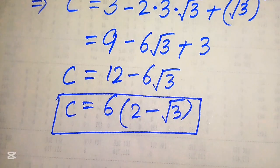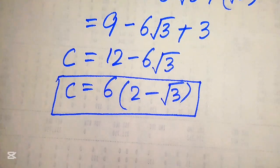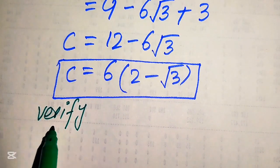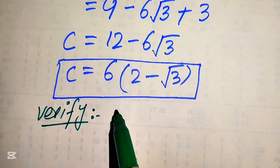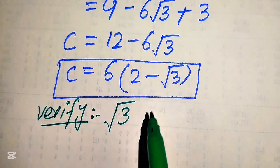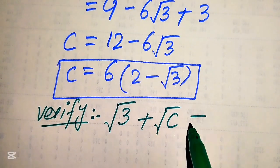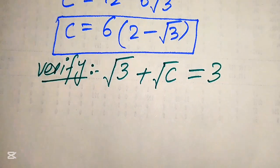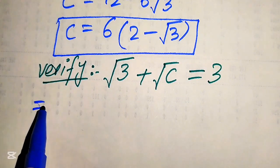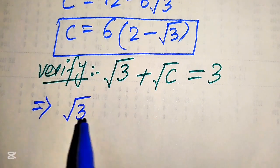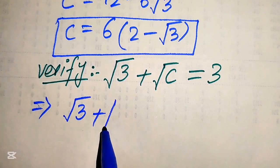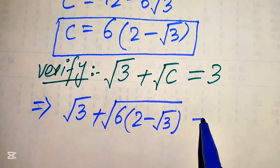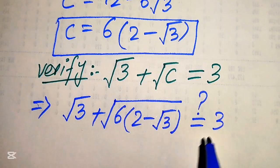Now in the next step we need to verify this value of c and check whether it satisfies the original equation. For verification we copy down the given equation: square root of 3 plus square root of c equals 3. We substitute the value of c, which is 6 times (2 minus square root of 3), and check whether this equals 3 or not.